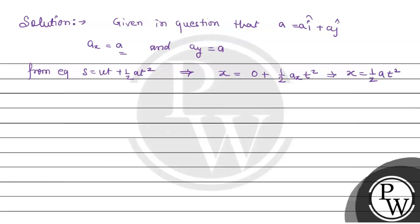So it means x equals half a t square. Now, from this condition, the equation I'm getting tells me that 2x upon a equals t square. Meaning wherever I have to put t square value, I can write 2x upon a.